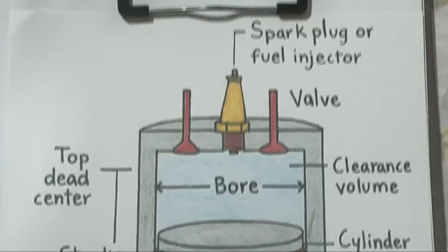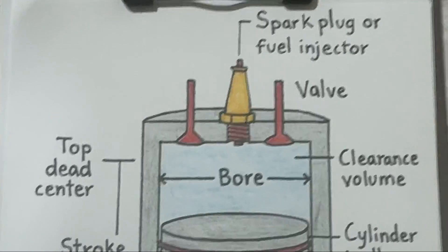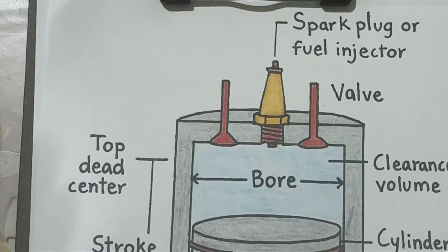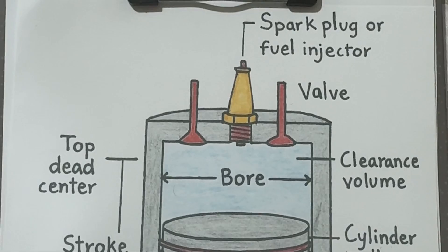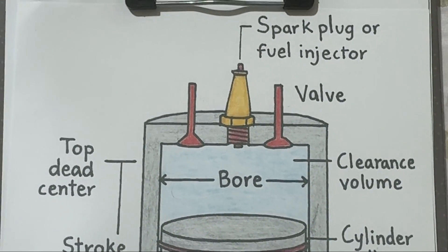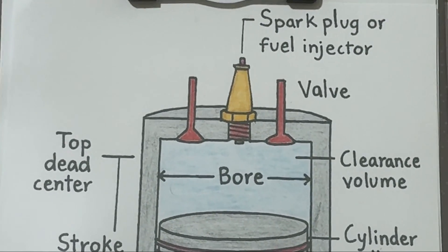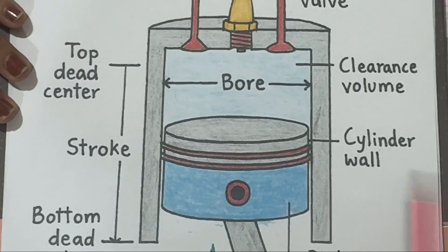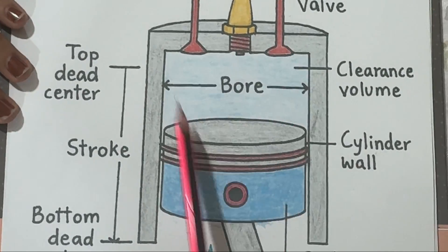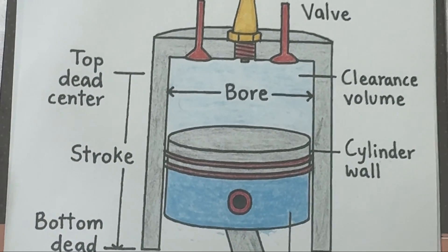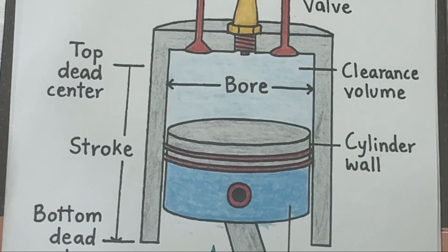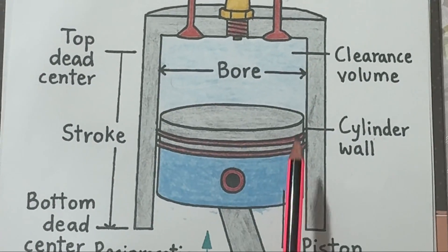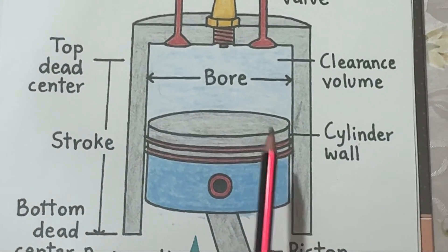Hi everyone. In this video we are going to look at how a piston works inside an engine. The cylinder is the heart of every internal combustion engine, whether it's in a car, bike, or generator. Let's break it down part by part. The cylinder is the mini chamber where all the action happens — the fuel burns, pressure builds, and power is generated. Inside the cylinder, the piston moves up and down to convert fuel energy into motion.